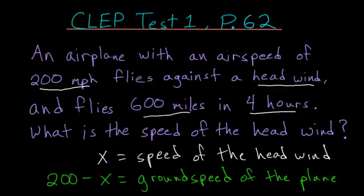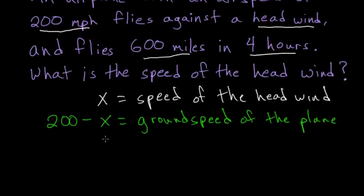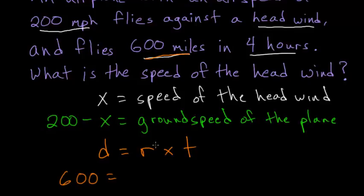If we apply the idea that the total distance traveled is equal to the rate multiplied by the time, we can use this formula to figure out the speed of the headwind. Our total distance is 600 miles. So 600 equals the rate, which is the ground speed 200 minus x, multiplied by the time, which is four hours.